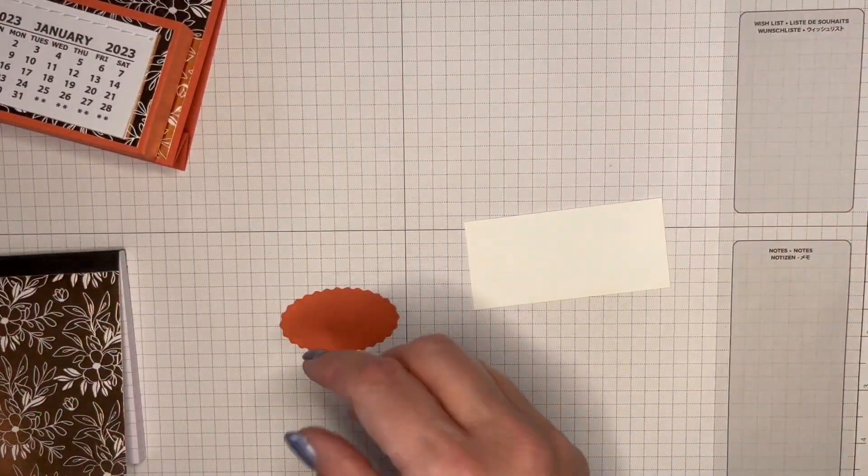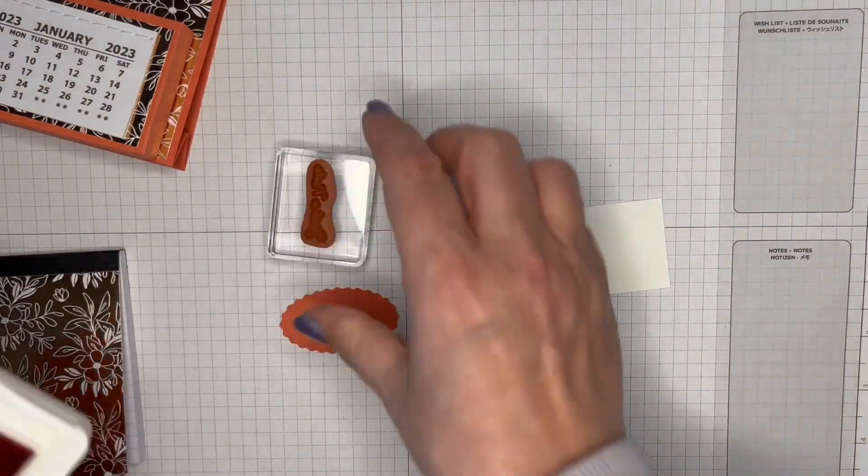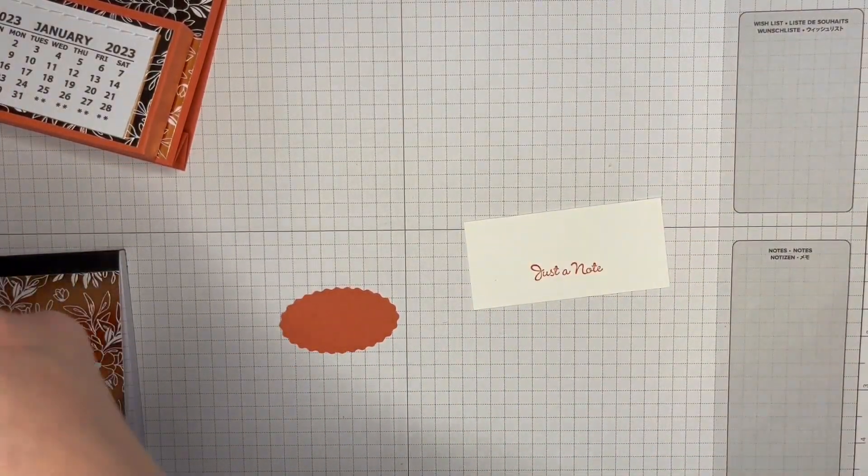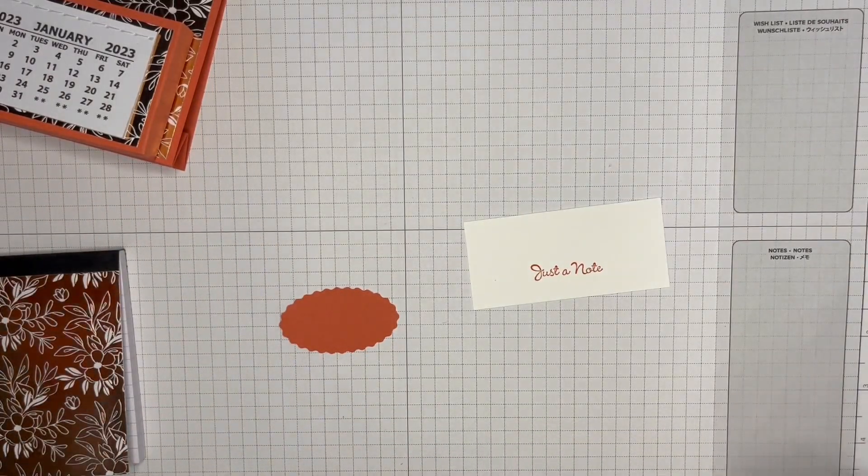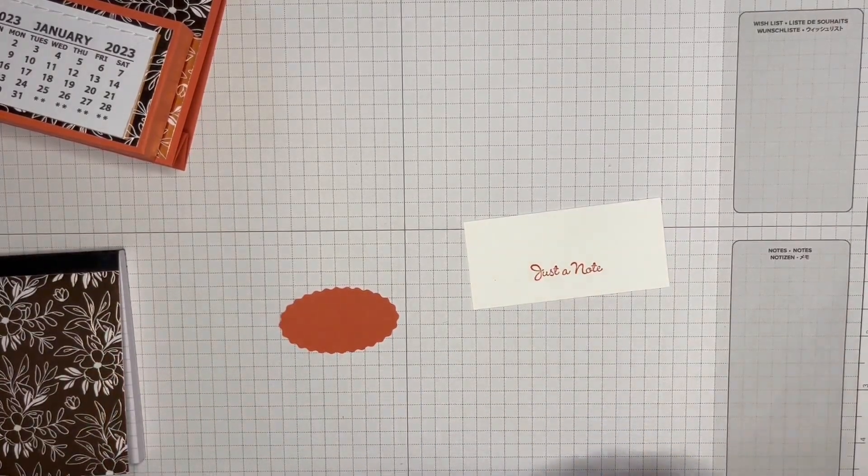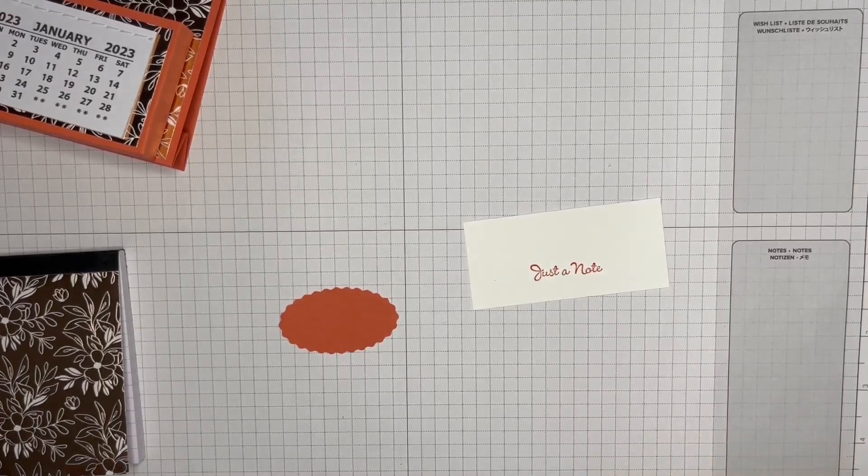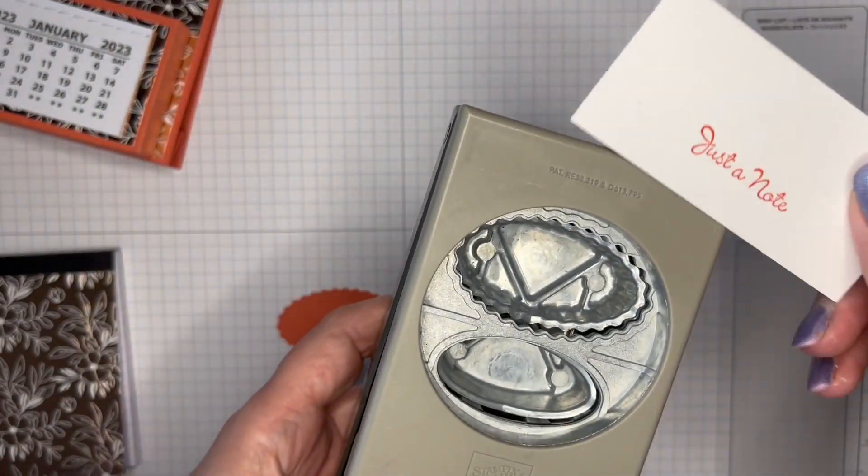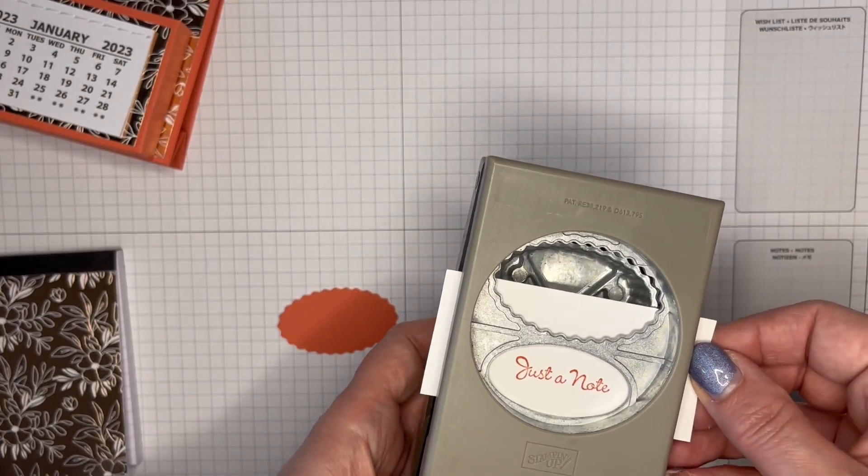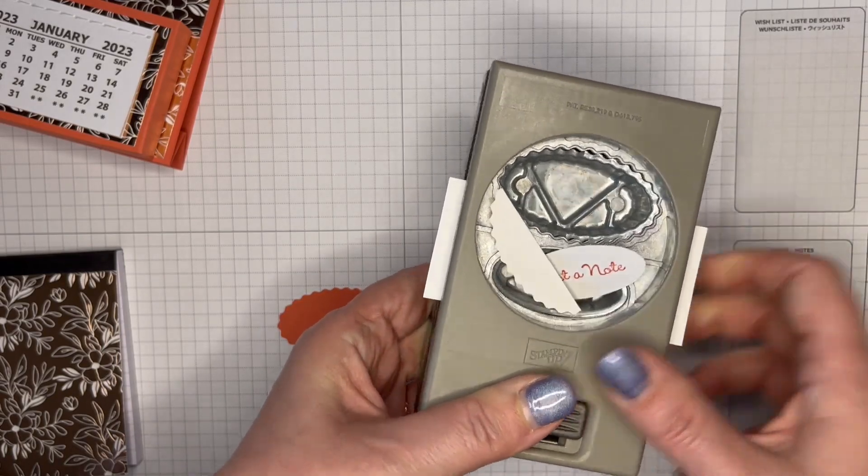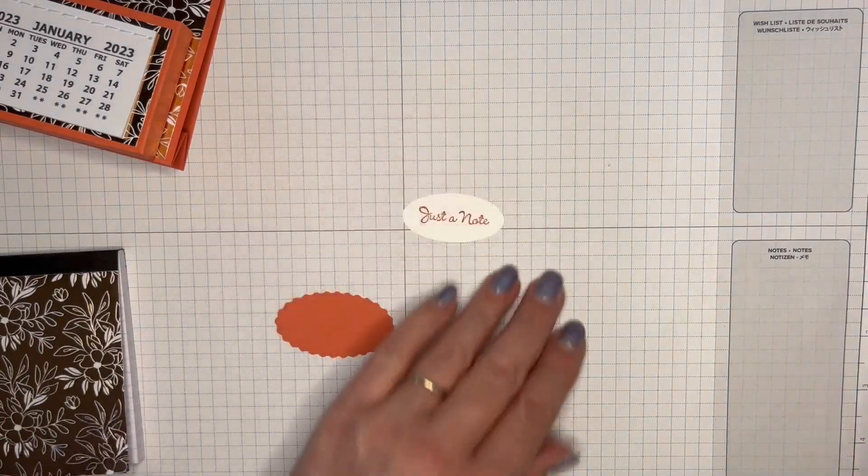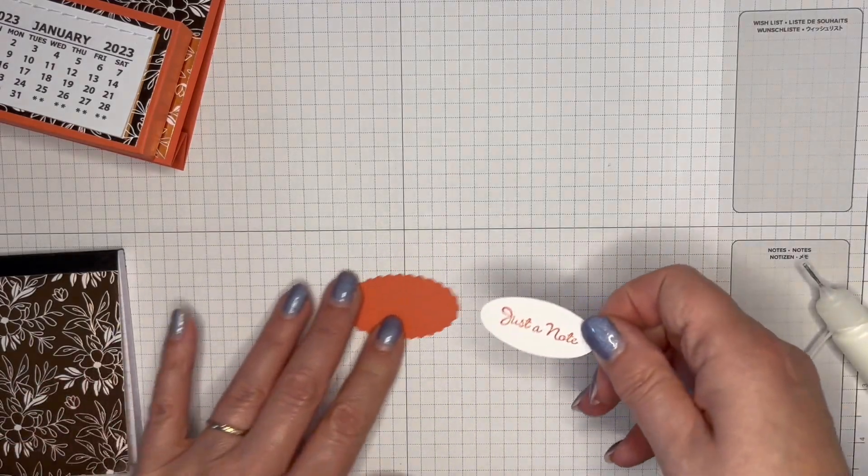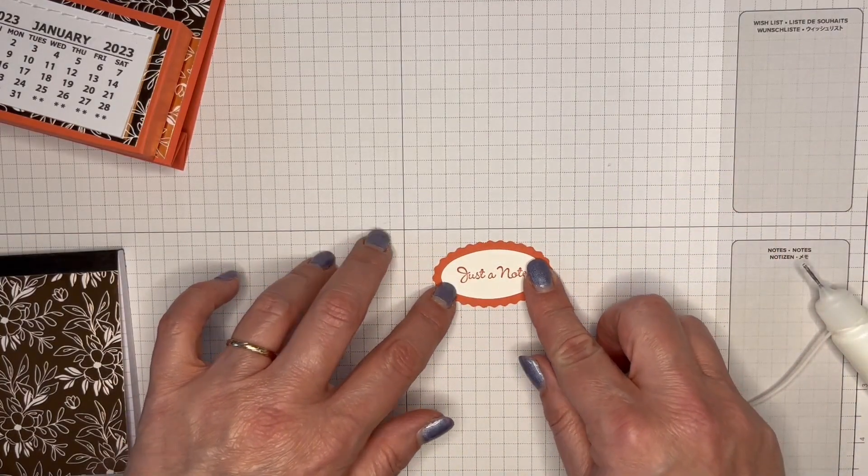The final piece is our little sentiment saying just a note. And I'm using Calypso Coral ink and that lovely little stamp from Go To Greetings. And my double oval punch. I've already punched one from Calypso Coral, but there's a larger size and then the smaller one. So just simply layer them up like that.